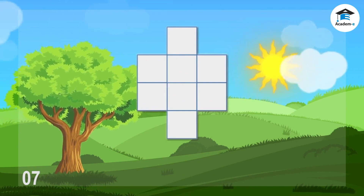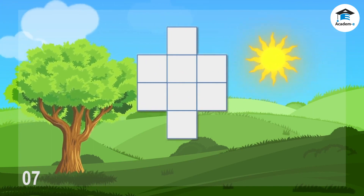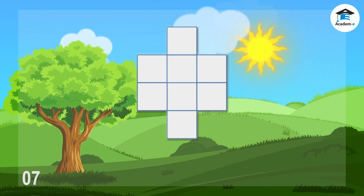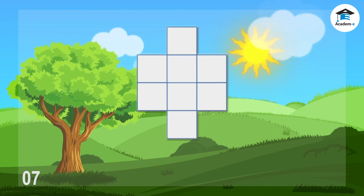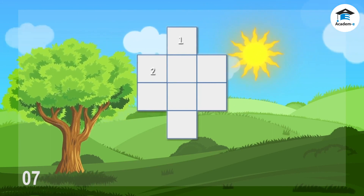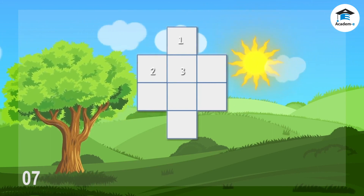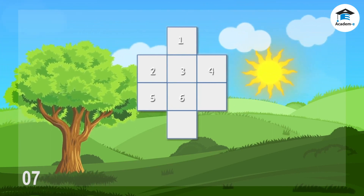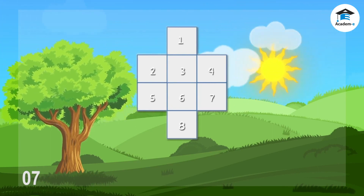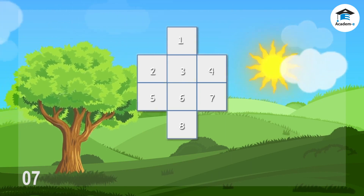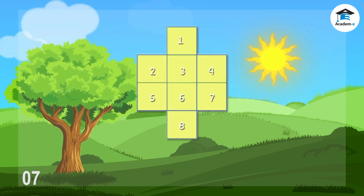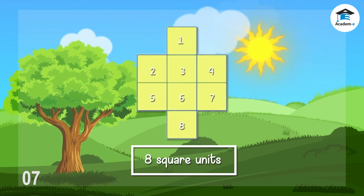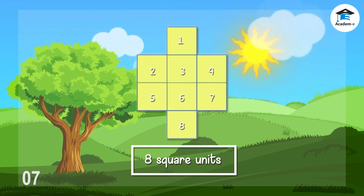Here's another example. Let's find the area of this figure — simply count all the squares. One, two, three, four, five, six, seven, eight. There are eight squares. Therefore, the area of this figure is eight square units.